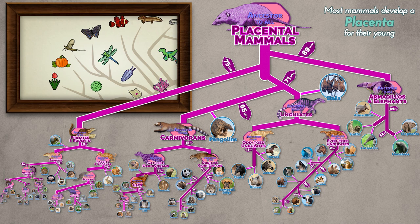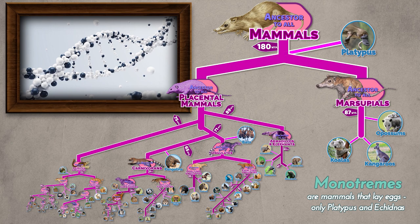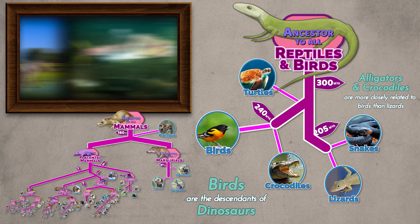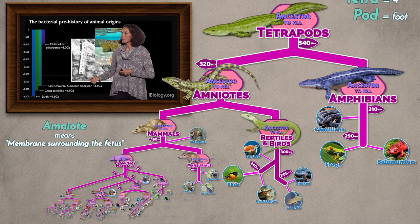All living things — me, you, pufferfish, banana trees — if you go back far enough, also share a common ancestor. We are literally related. All life on Earth has DNA, which is one of the reasons we know that all living things on Earth, from farmers to fish, from moles to microbes, have a common ancestor. It's why you share 98.4% of your DNA with a chimpanzee, and why you share nearly half of your DNA with a banana.